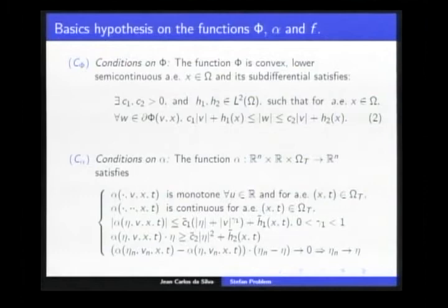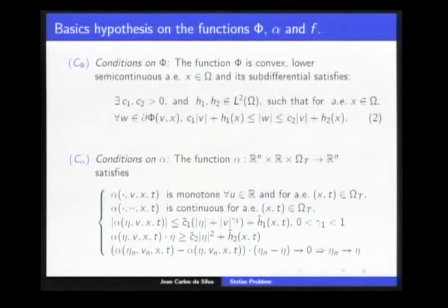The monotonous operator must be continuous in its first two variables. Its growth must be at most linear in the first variable and less than linear in the second one. It must satisfy a coerciveness condition, and this condition is necessary if our function f depends on the derivative of temperature.